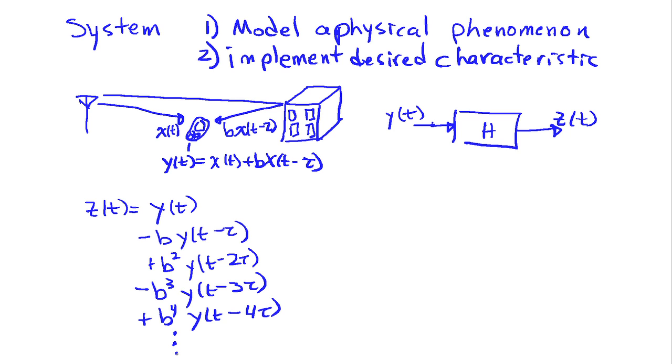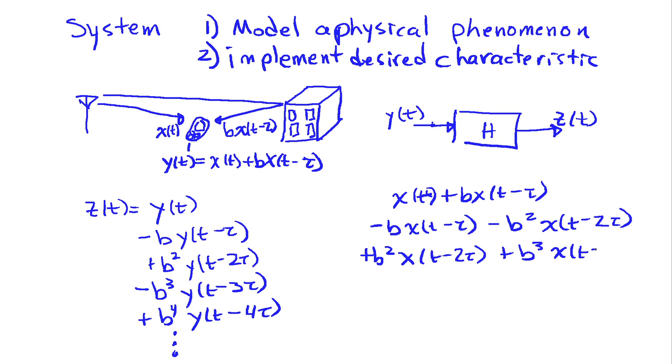I'm going to write out y of t here as x of t plus b x of t minus tau, and then I'll subtract off b times y of t minus tau, so that's minus b x of t minus tau minus b squared x of t minus 2 tau. Then for the b squared term, I'm going to be adding in plus b squared times y of t minus 2 tau. Well, that's going to first involve b squared x of t minus 2 tau, and we'll have plus b cubed x of t minus 3 tau.